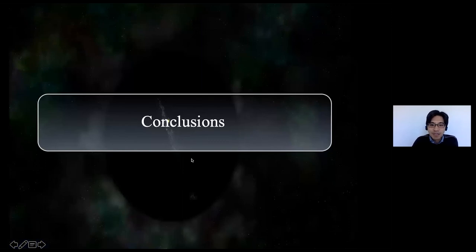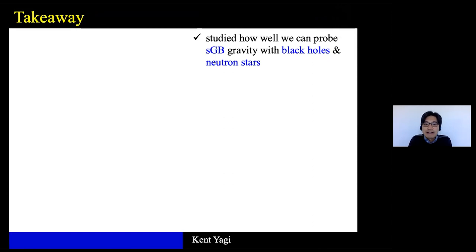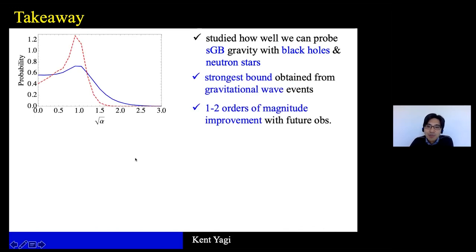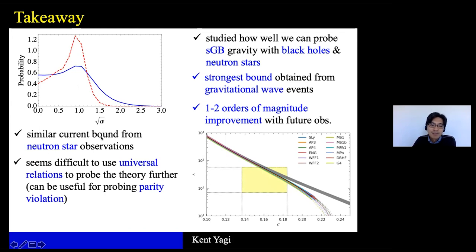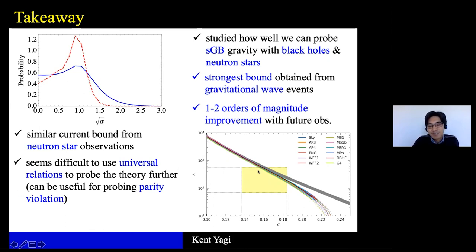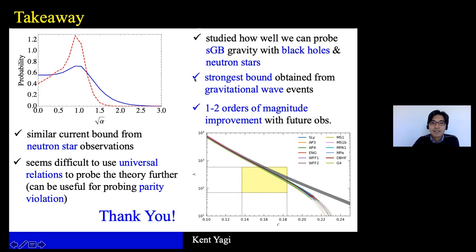To conclude: we focused on testing string-inspired gravity, namely scalar Gauss-Bonnet gravity, using black holes and neutron stars. Using gravitational wave observations, we derived the strongest bound by combining binary black hole events with black hole–neutron star merger events, with future forecasts showing improvement of one to two orders of magnitude. For neutron stars, similar bounds can be obtained from mass-radius relations, but those are equation-of-state sensitive. There are equation-of-state insensitive ways of probing gravity through universal relations; while scalar Gauss-Bonnet gravity is difficult to probe this way, such universal relations can be useful for probing, for example, parity violation in gravity. Thank you.